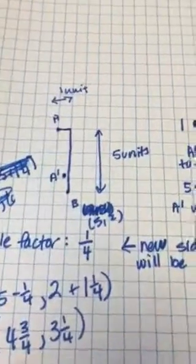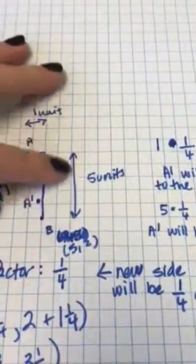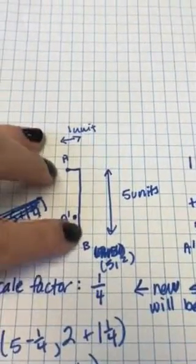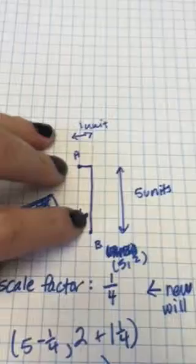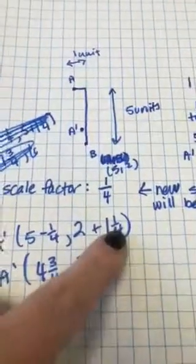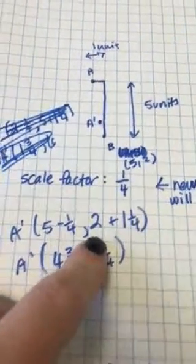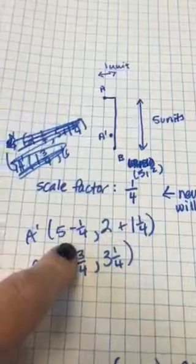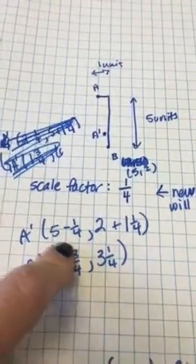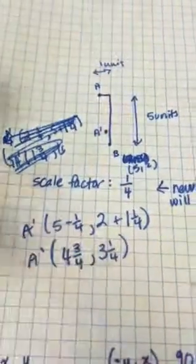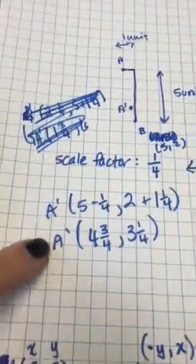Similarly, if I do the same thing with the vertical distance, this vertical distance is five units, and one-fourth of that is one and one-fourth. So A prime is now just going to be one and one-fourth above B. Since it's above, I'm going to add one and one-fourth to that y-value because this point is above two. I subtracted over here because this point was to the left of five. On our horizontal number line when we subtract, we move left. On our vertical number line when we're adding, we're moving up. This gives us the new coordinates of A prime.